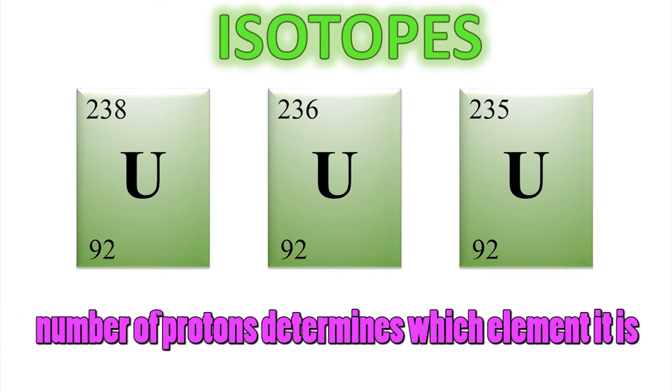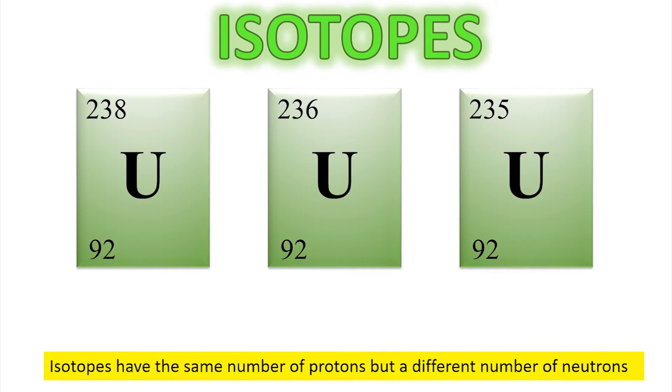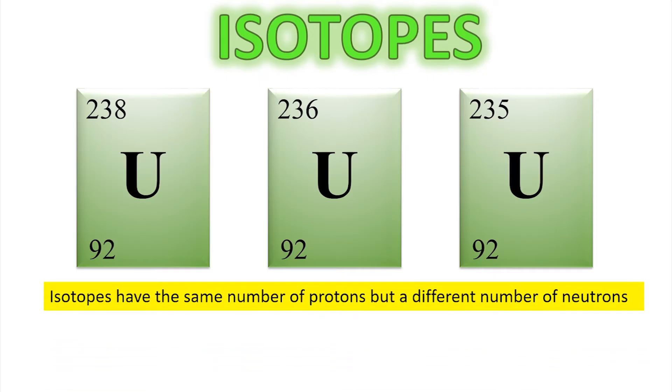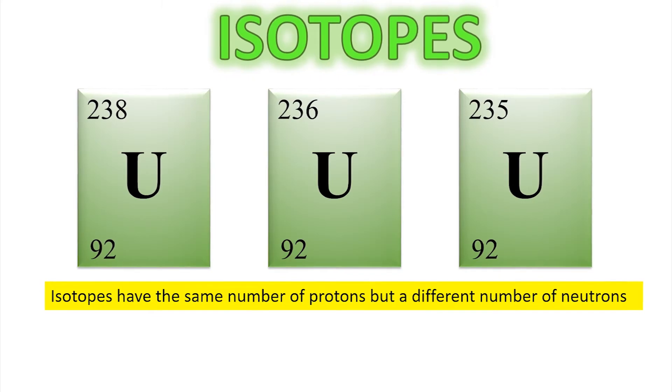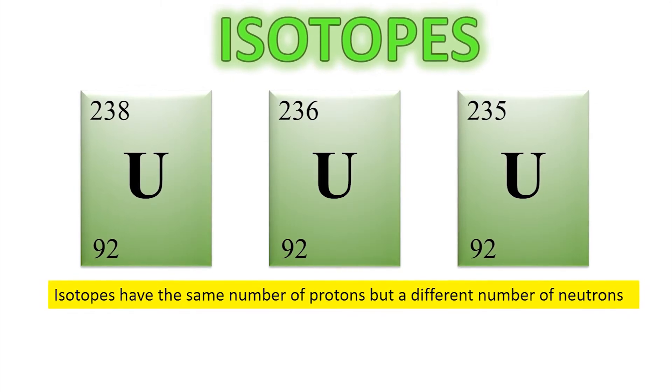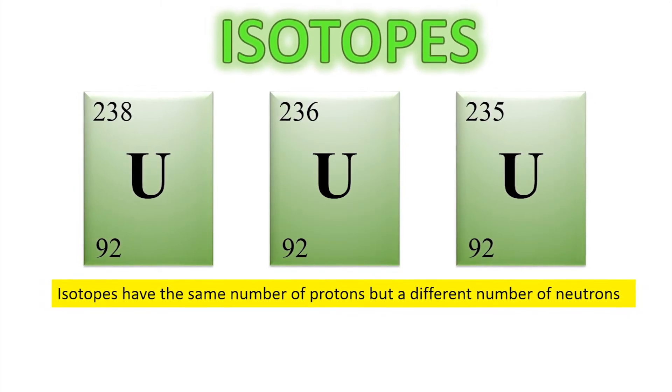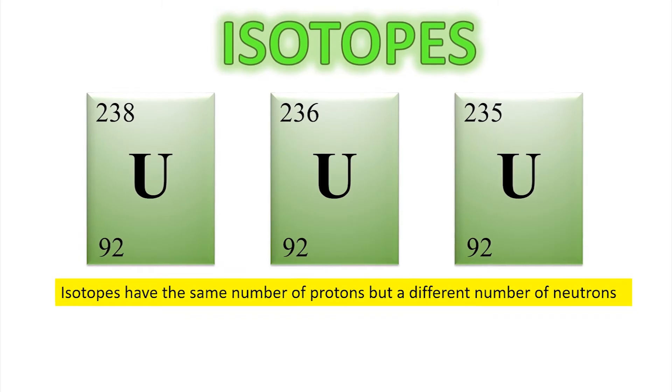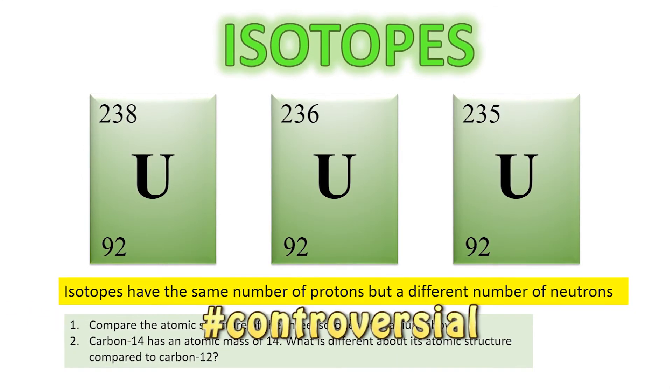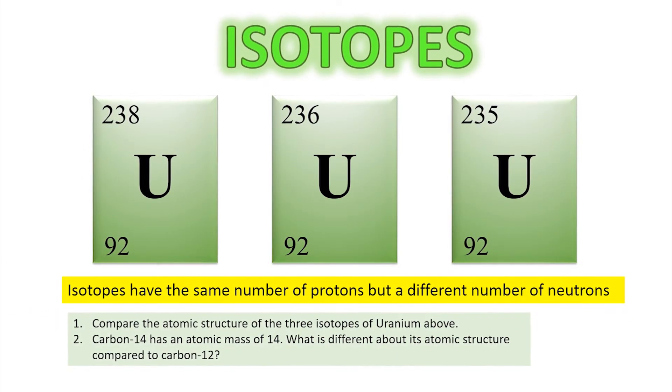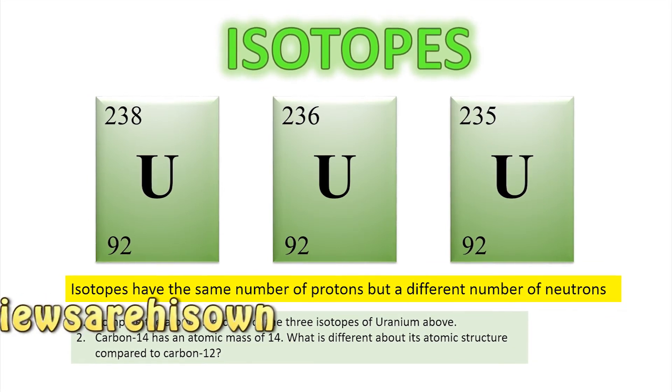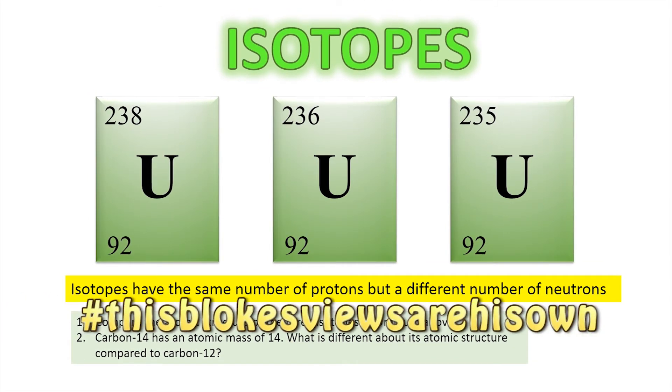But look at the numbers at the top. Isotopes have the same number of protons, but they can have a different number of neutrons. So uranium 238 is the most commonly found form of uranium which we find in the Earth's crust, but there are other isotopes of it as well. Naughty Iran, well that's a matter of opinion, is trying to enrich uranium. That means trying to make uranium 235, which can be used in nuclear reactors and things.